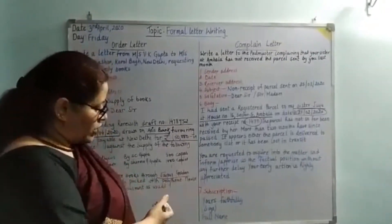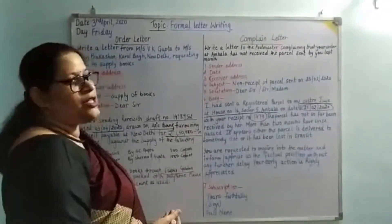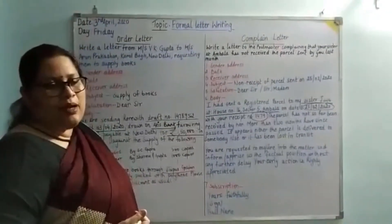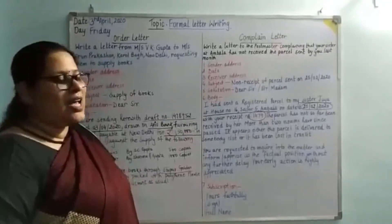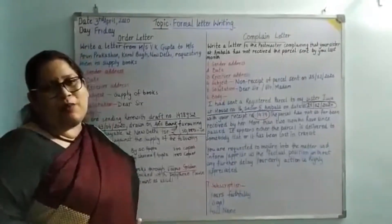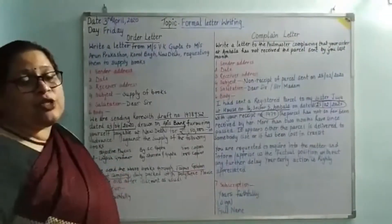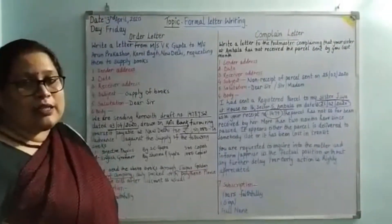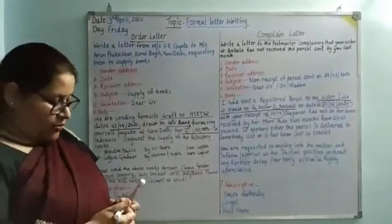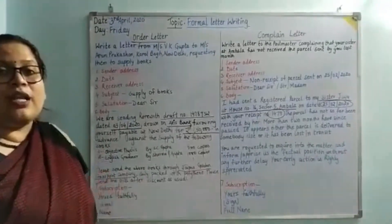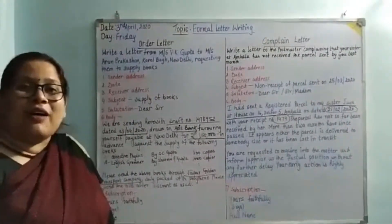This is followed by the subscription — 'Yours faithfully' — your signature, and your full name. Please make sure 'Yours' has a capital Y without an apostrophe-s, 'faithfully' begins with a small f, and your name's initials begin with a capital letter. This completes our section on formal letters, including how to write them.